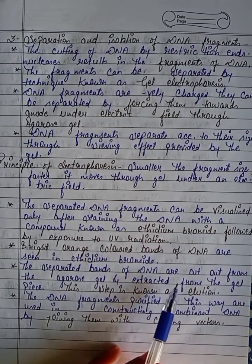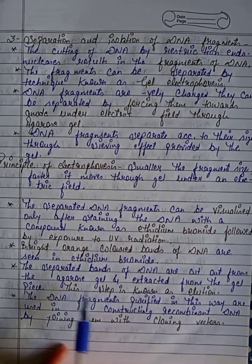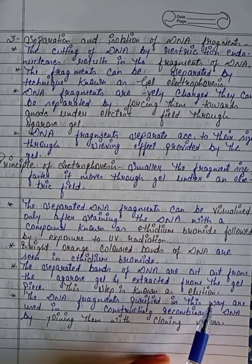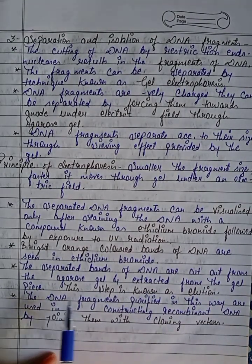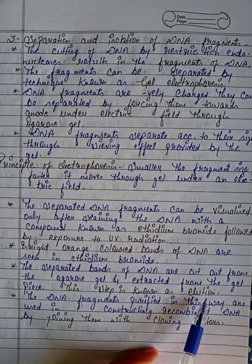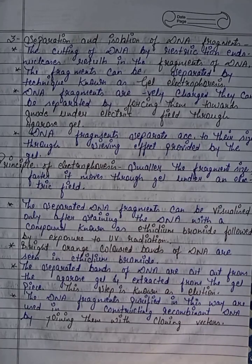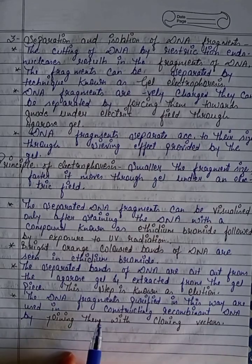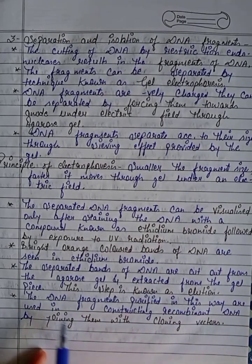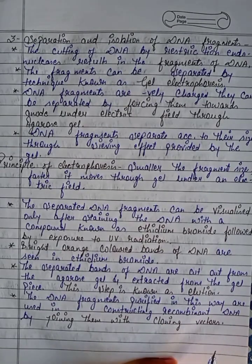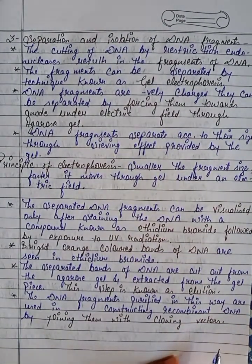The separated bands of DNA are cut out from the agarose gel and extracted from the gel piece. This step is known as elution. The DNA fragments purified in this way are used in constructing recombinant DNA by joining them with cloning vectors.